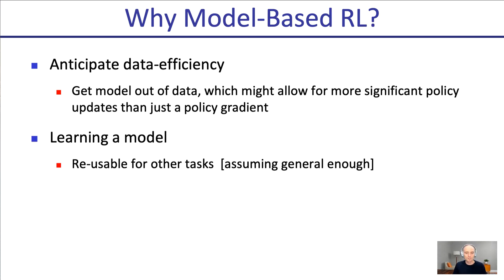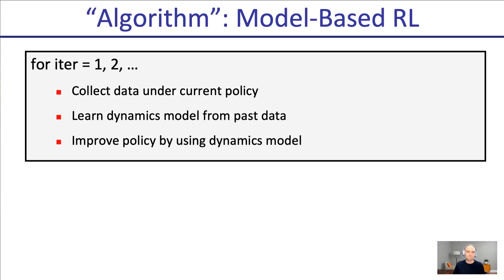So why model-based RL? You anticipate data efficiency — you get a model out of data, which might allow for more significant policy updates. And by learning a model, what you learn could be reusable for other tasks; it's not specific to the reward you're training with. If somebody later has a different reward, you can still use your model and optimize that new reward within it. The algorithm: collect data, learn a dynamics model from past data, improve the policy using the model, and repeat.